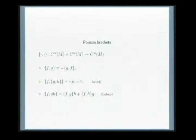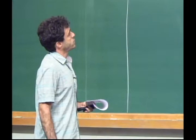The third axiom is a compatibility between the Lie bracket and the natural commutative algebra structure on C-infinity of M — you have a Leibniz rule. This is an abstraction of a very familiar concept in classical mechanics, going back to the 19th century, mostly from celestial mechanics. I want to point out two things about this object. First, I defined it algebraically, but it has a more geometrical incarnation.